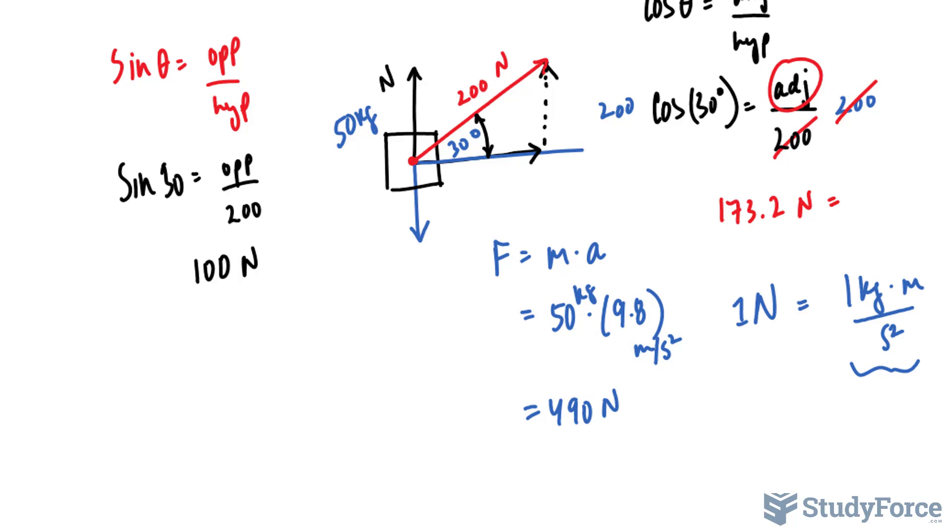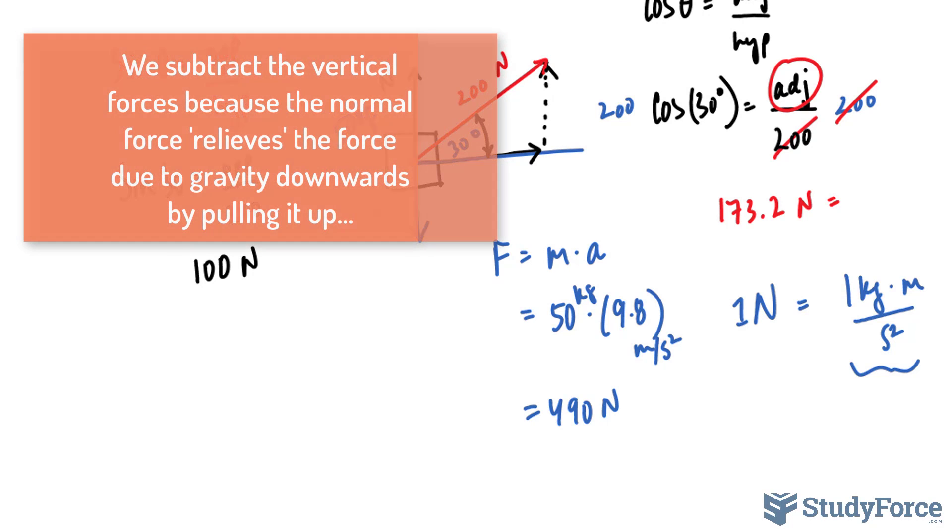So we have a normal force going upwards and a force going downwards due to gravity. I'll take the difference between those. So I have 490 newtons minus 100 newtons, and that is 390 newtons.